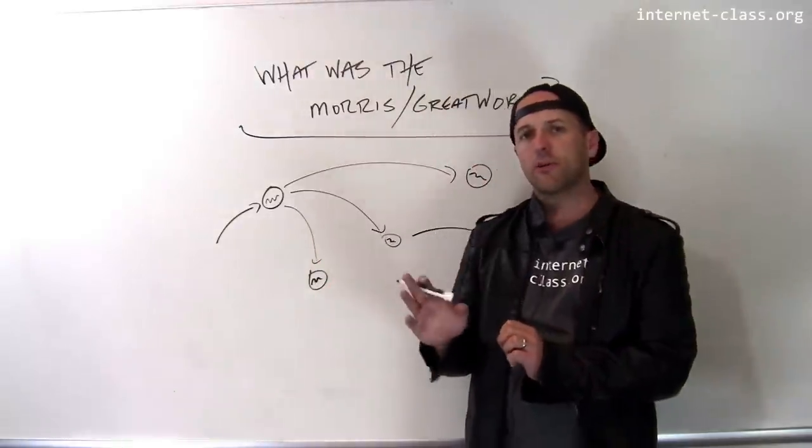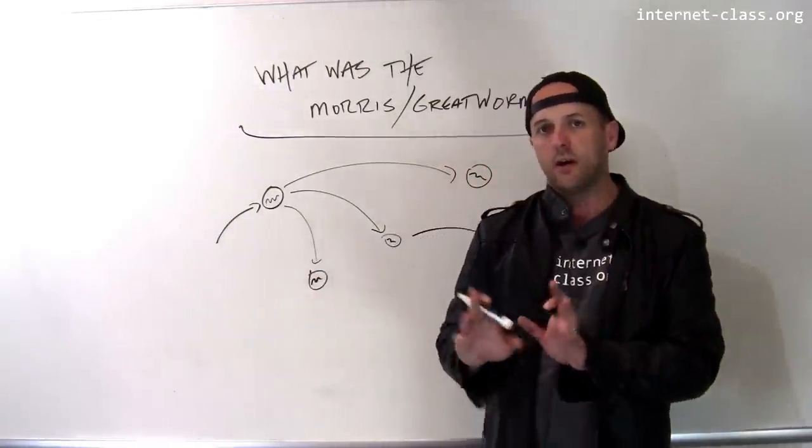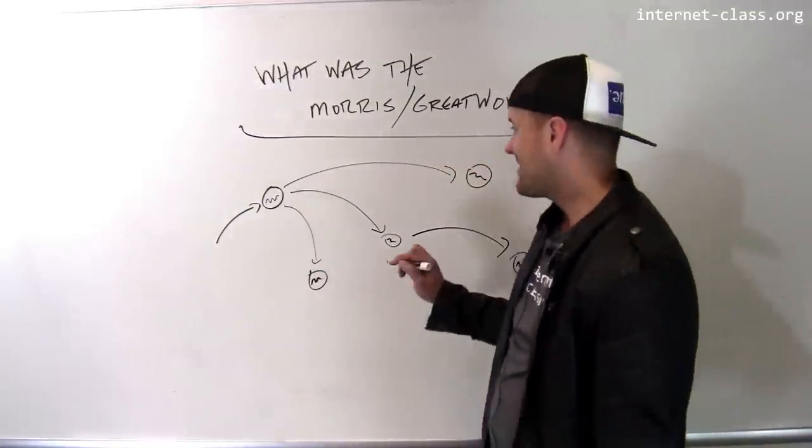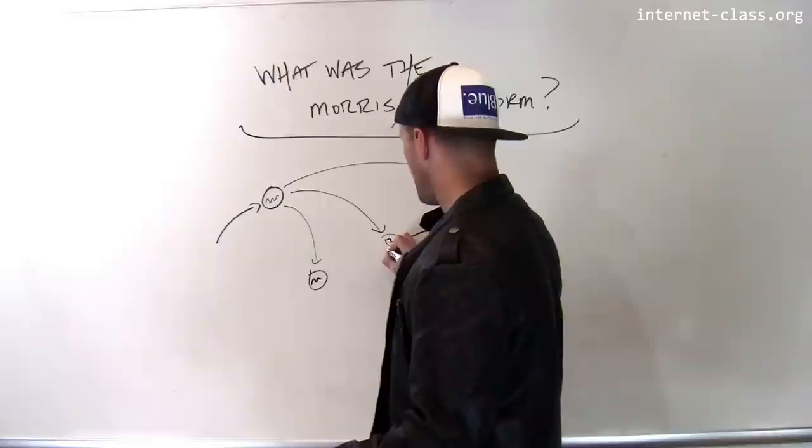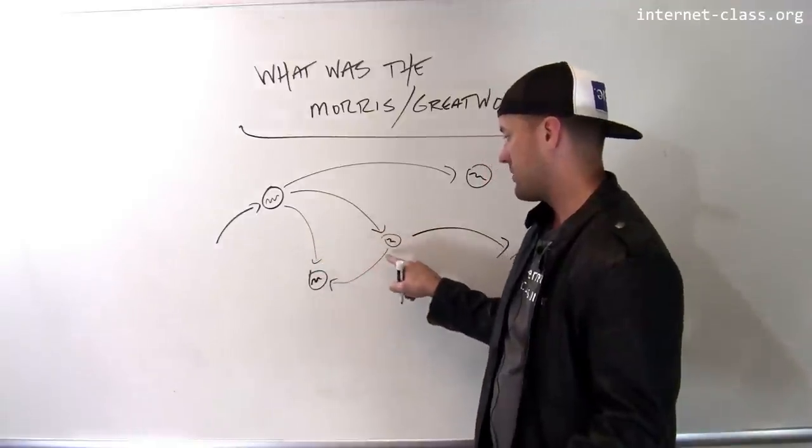However, Robert Morris was concerned about the fact that people might try to defend themselves from this worm by just claiming that there was a copy there when there wasn't. And so what he did is that when this worm is going to go to this computer, and the worm already is here, it already arrived from another computer.